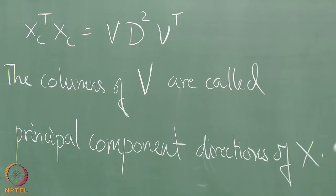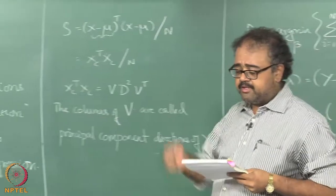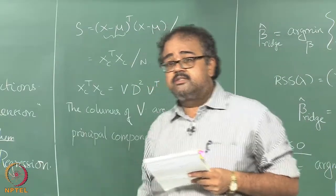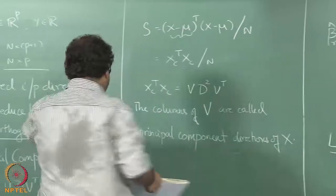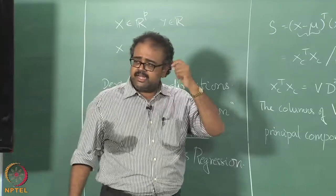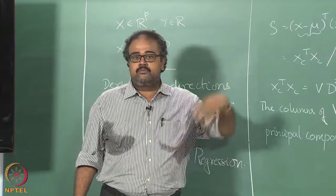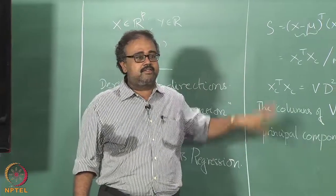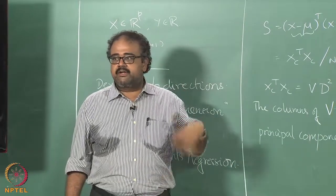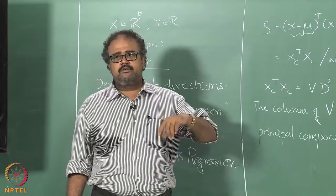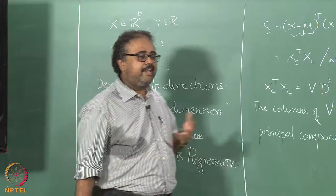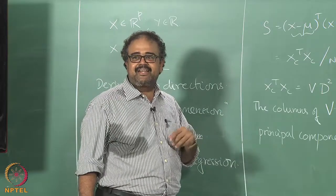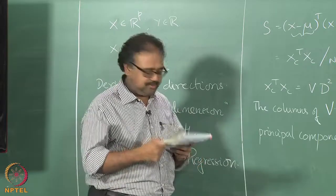The columns are called the principal component directions of X. There are a couple of nice things about principal component directions — we will talk about just one here. I will come back to PCA slightly later when I talk more generally about feature selection, not just in the context of regression. I will show you more fully why PCA is good then.